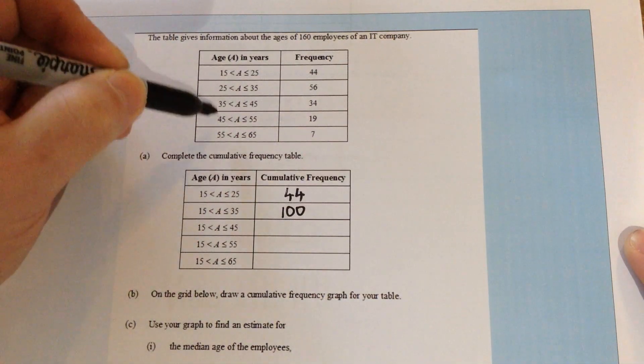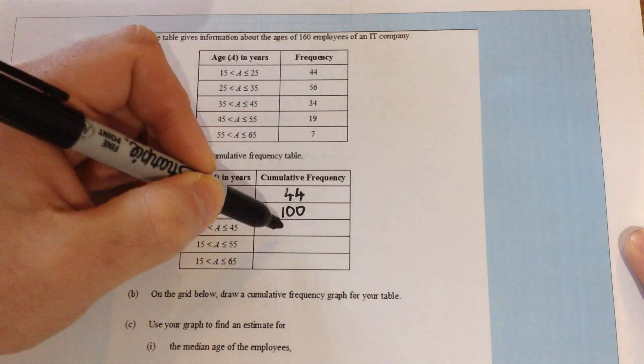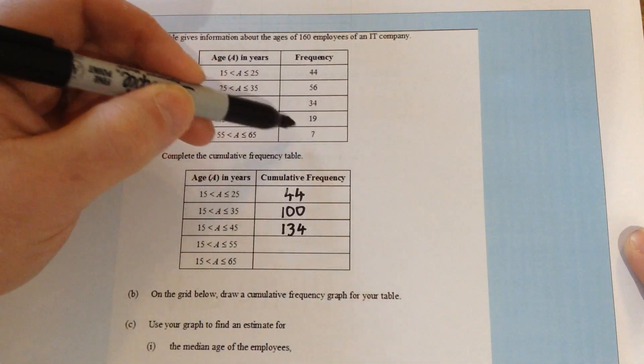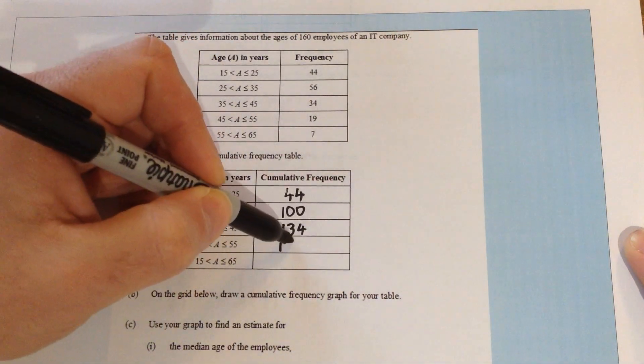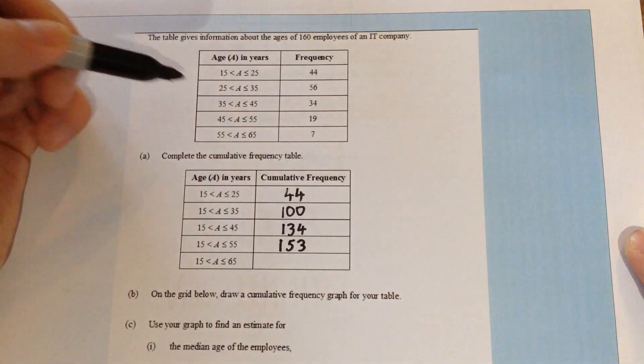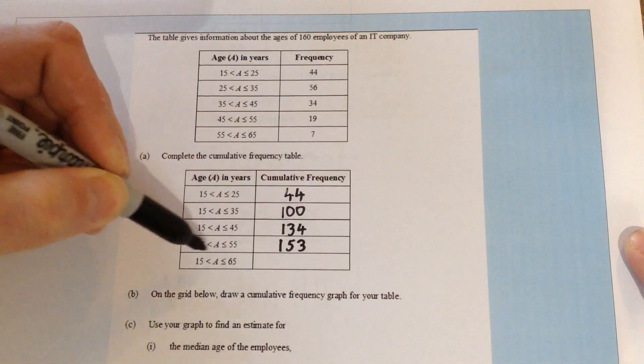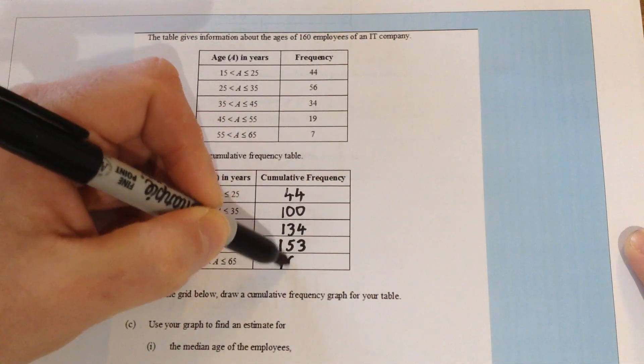The next group down adds on this group as well, so 134. We then have to add on 19, so this would give us 153, and finally this group, the seven group, because here we are including everybody, so we get 160.